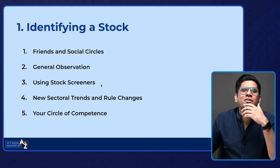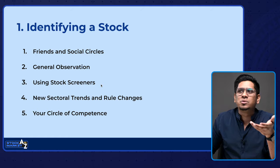Number two is general observation. You live your life and go around, and you might see that some brand, product, or service is doing really well. When that happens, you can find out if that company's stock is listed in the stock market. If it is, bring it into your circle of stocks you need to study.